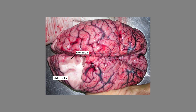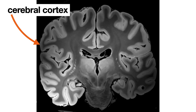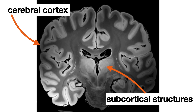Here is an image of a human brain where you can see portions of gray matter and white matter. Back to our MRI image — in addition to the cerebral cortex, the cerebrum also includes some subcortical structures, so named because they lie deep within the cerebrum, beneath the cortex. Let's take a look at the brain's two subcortical systems: the limbic system and the basal ganglia.